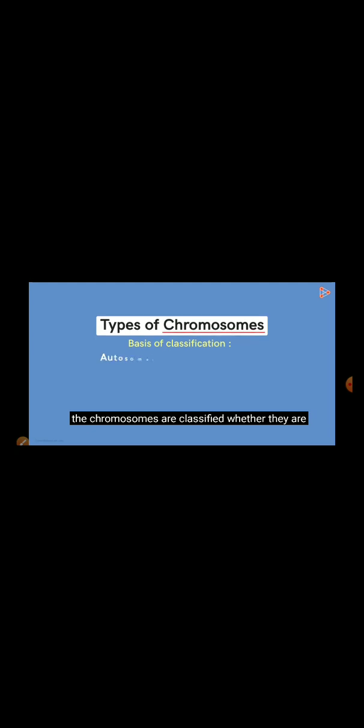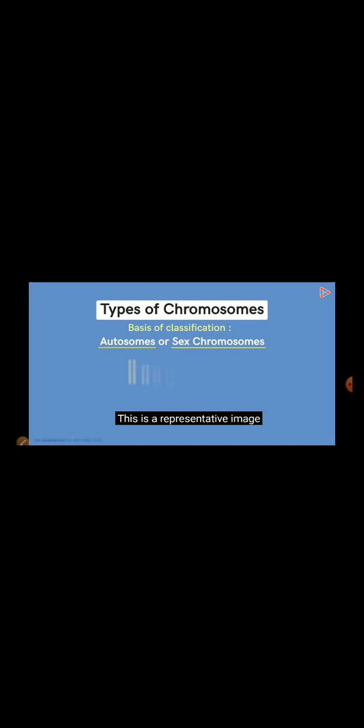Now, let's have a look at the other type of classification. This is a much simpler type of classification. Here, the chromosomes are classified whether they are autosomes or sex chromosomes. Now, what could these be? This is a representative image of a typical human karyotype. The chromosomes that pair from 1 to 22nd are called autosomes. That is, they are not the sex chromosomes. To be precise, they have got no function to deal with the sex of the individual.